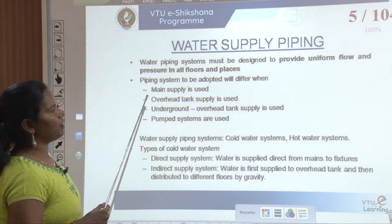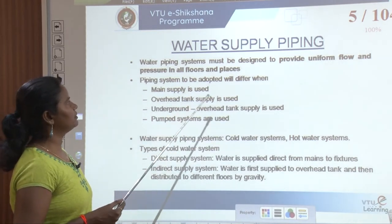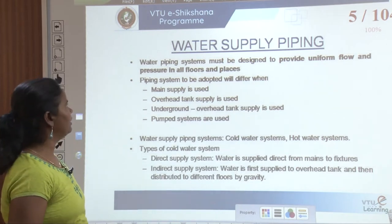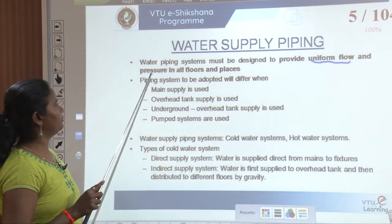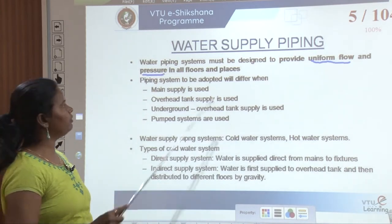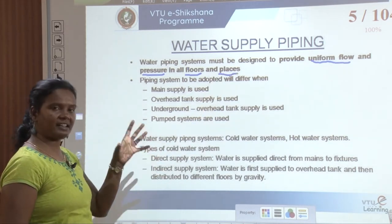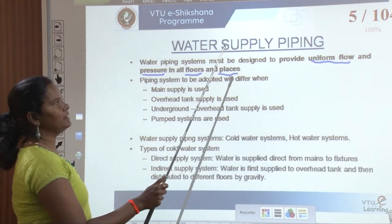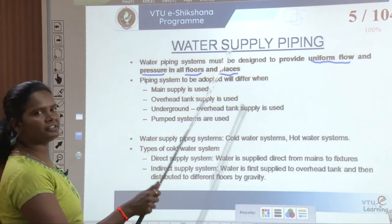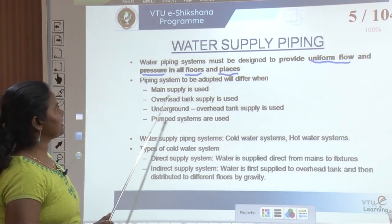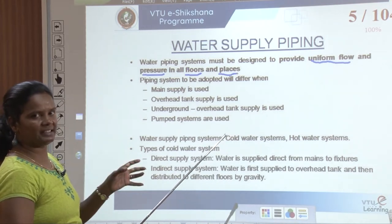Water supply piping: now we know the water demand required for a particular building. It is always preferable to have uniform flow and pressure in all floors. The water piping system — the size of the pipe and fixtures used — must satisfy uniform flow and pressure across all floors. That is the main criteria for fixing pipe sizes and materials.